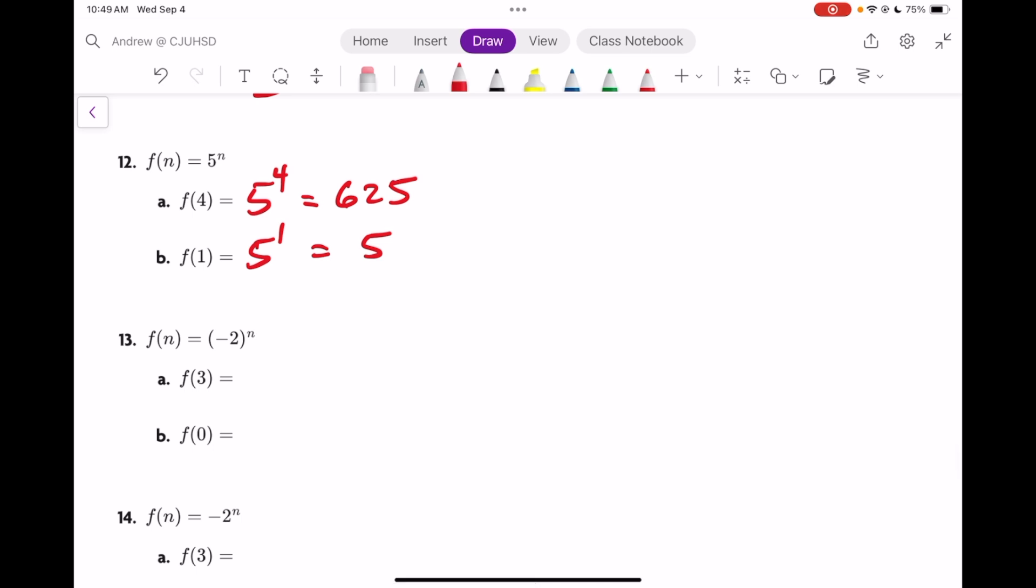Negative 2 to the 3rd, the way it's written with parentheses means this, and that's negative 8. But still, you take negative 2 to the 0 power and you get 1.